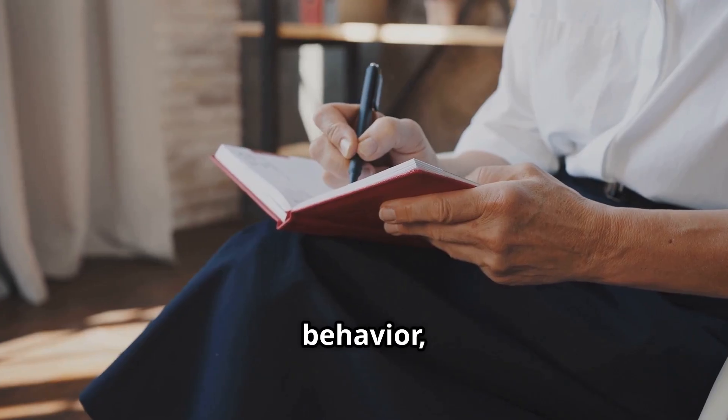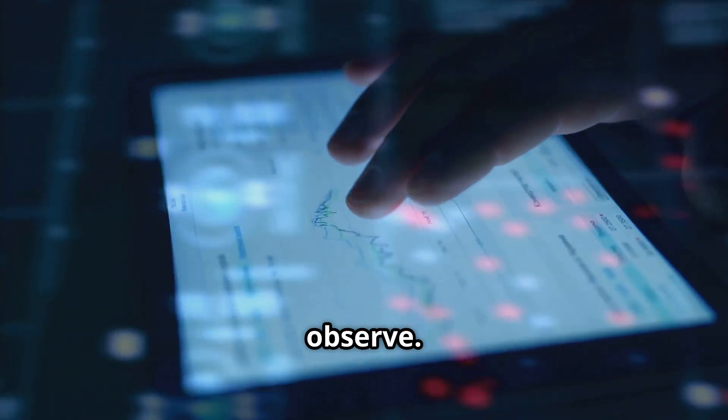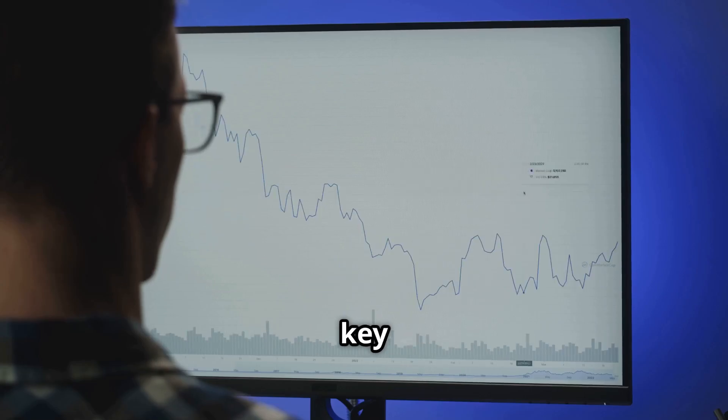It focuses on observable behavior, actions we can see and count. We gather data on what we can directly observe. Measuring behavior is key in ABA.